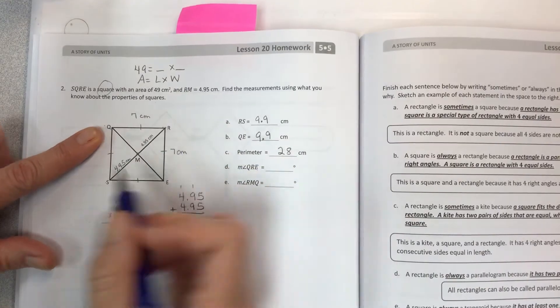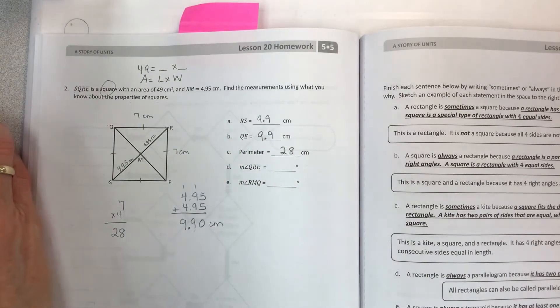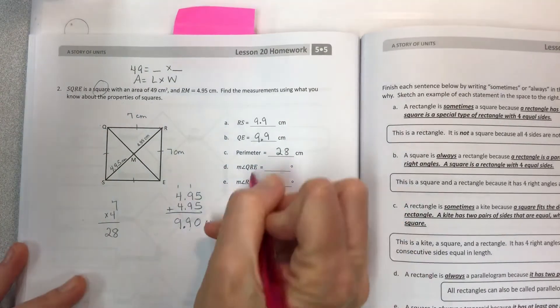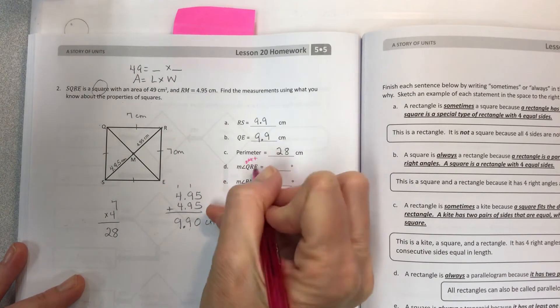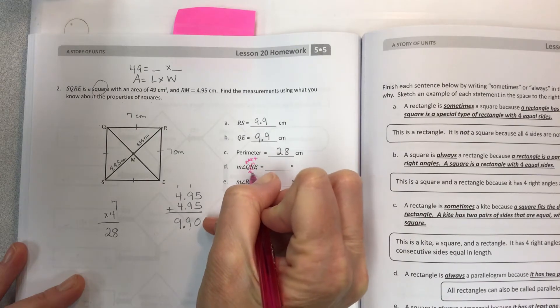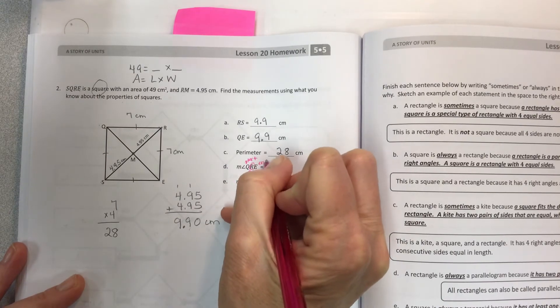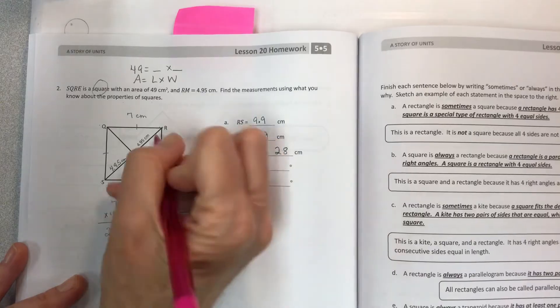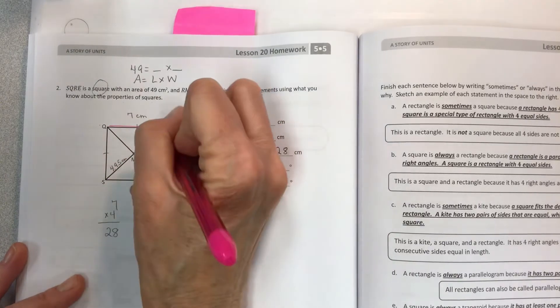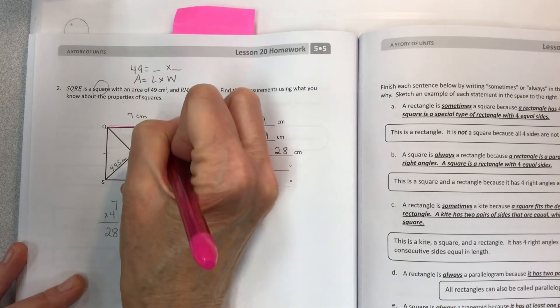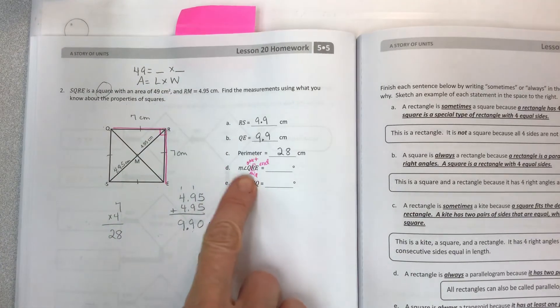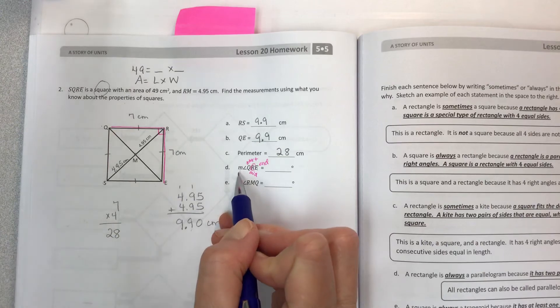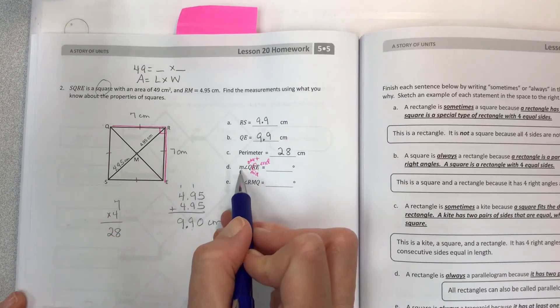QRE—Q, R, E. So if you look here, take the starting point, this is the middle, and then this is the end. That's a great way to just look and see—this is the vertex right here. Q, R, E. This is the angle that they want to know. The measure of the angle QRE. That throws people off too because it's not the point, it's the measure, and that is going to be 90 degrees. Look at this nice little degree mark there, because it's a square.